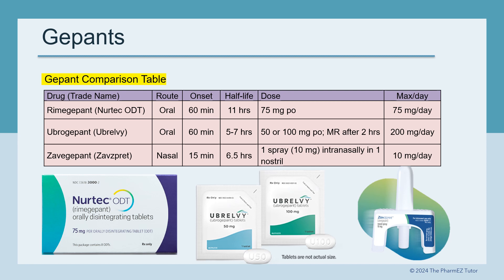A third G-PAN, which is a nasal spray, was approved in 2023 and added to the list. It's called Zavegepant or Zavspret. It has an onset of 15 minutes, which is quicker than the oral G-PANs. The dose is 1 spray intranasally in 1 nostril, with a maximum daily dose of 1 spray.